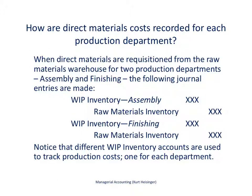We'll start by talking about how direct material costs are recorded on the books for each production department. When a production department pulls direct materials out of the raw materials warehouse, we need to record that. What you see here with this journal entry is the recording of pulling out raw materials inventory for the assembly department, where we add the direct materials to work in process — assembly department — and take those direct materials out of the raw materials inventory account.